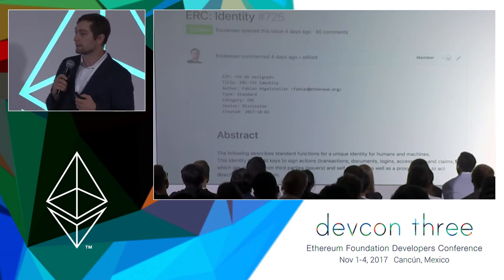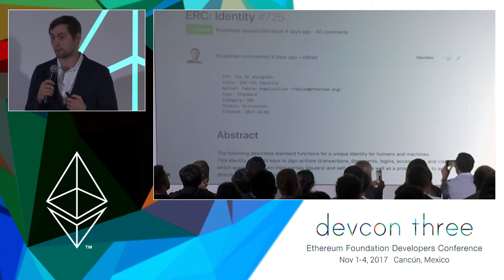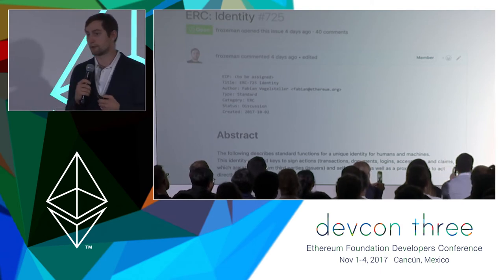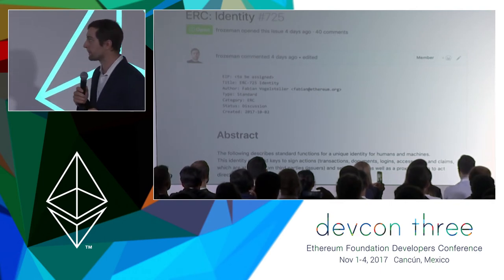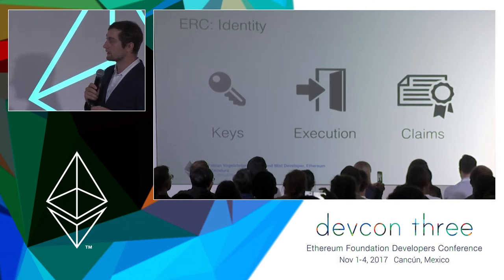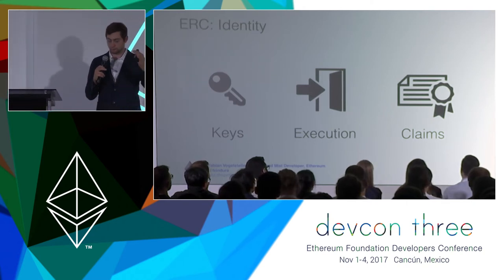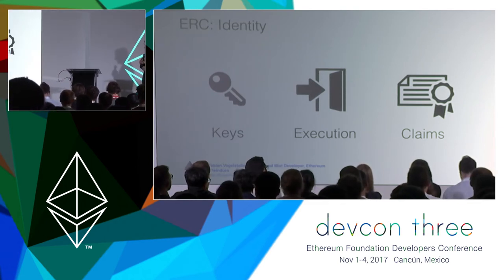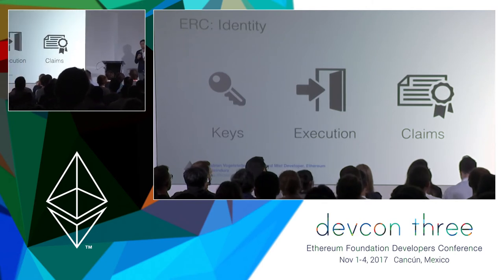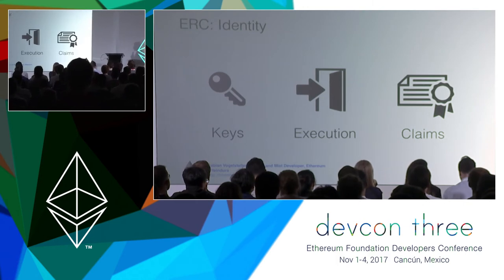I created this standard which basically defines a smart contract that represents you — not even just a person; it could also represent a machine, an item, an object, or a company. This identity standard consists of three components. It is itself a smart contract representing you, and it has: keys, which are your operators; execute, so you can actually act on a blockchain as yourself; and claims. I will now explain these three pieces and show some examples of how this can work.